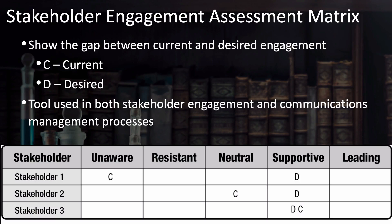Is there ever a time when you might want a stakeholder to be unaware of a project? It's not common, but there are some cases. In a simple example, you may be organizing a surprise party and one of the key stakeholders is the person you want to surprise — you want them to be unaware, and you may specifically call that out in your management of this project. Or you may be working on government projects that require compartmentalization of information, in which case you may want to specifically identify stakeholders or groups that should be kept unaware, at least for the time being, and maybe longer.